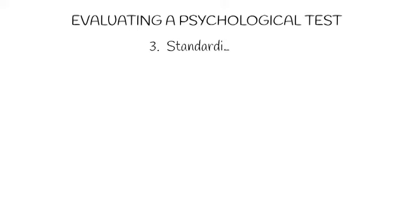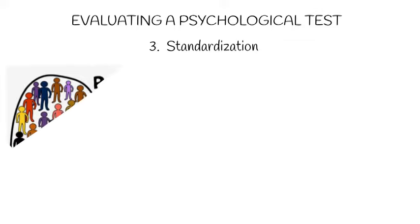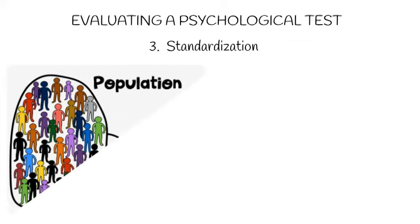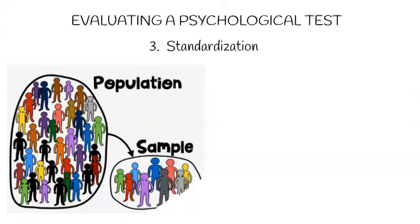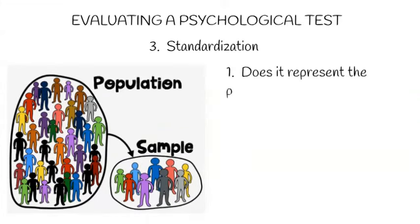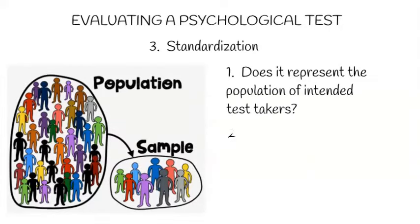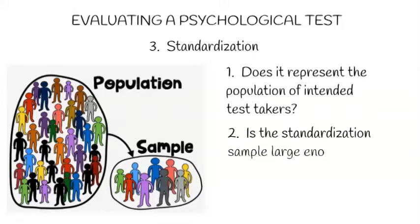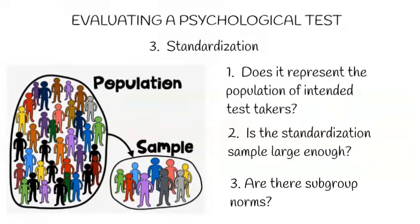Another important consideration is the process carried out to standardize the test. Crucial here is to check the norms to which test takers' scores will be compared. Norms are usually generated from a standardization sample. We need to ask three questions: first, does the sample represent the population of intended test takers? Second, is the standardization sample large enough? Third, are there subgroup norms? These points will be explained in more detail in another video on test standardization.